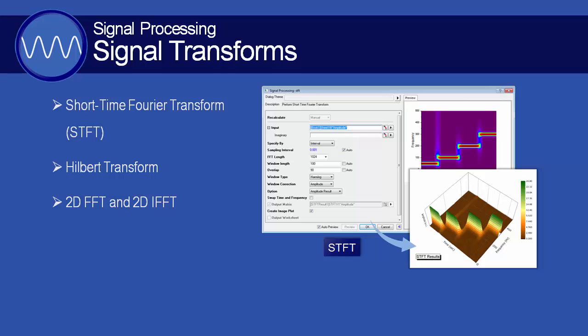Origin Pro offers three advanced signal transform tools: Short Time Fourier Transform, Hilbert Transform, and 2D FFT and 2D IFFT.